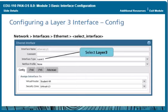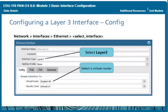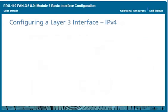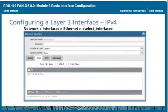Select the interface type of Layer 3. If you want to route traffic to and from the interface, you will need a virtual router. Select it from the Virtual Router drop-down list, or add one later. All Layer 3 interfaces assigned to a specific virtual router share the same routing table. Then select a security zone from the Security Zone drop-down list — only zones configured as Layer 3 zones appear on the list.